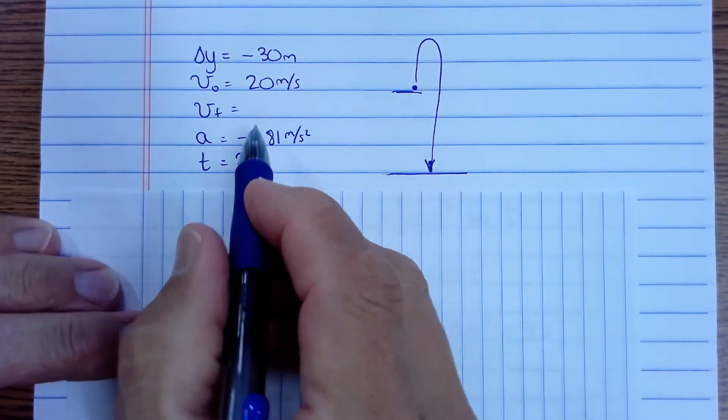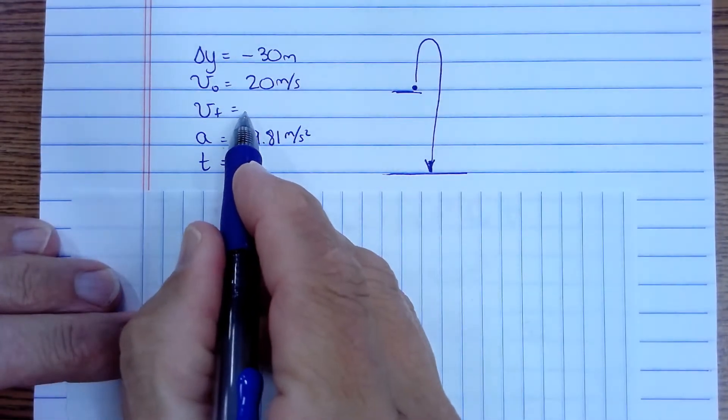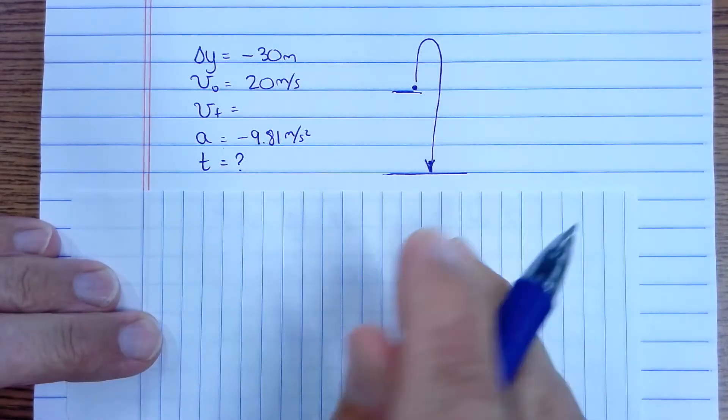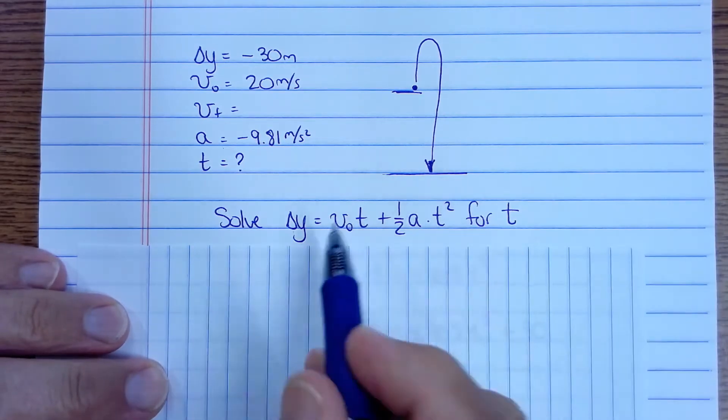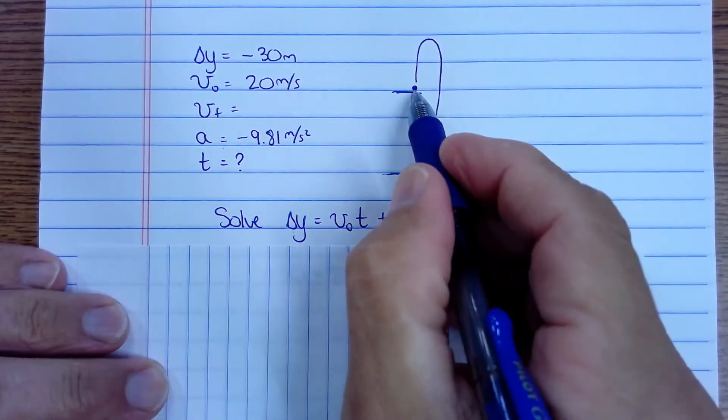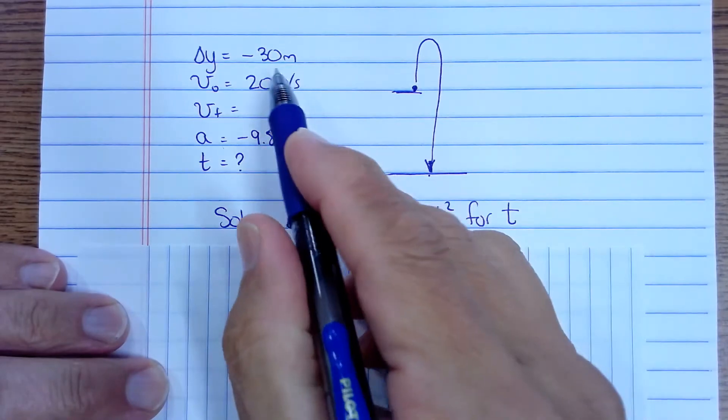You do not know the final velocity because you don't know how fast it's going when it hits the ground. So you're going to have to solve this equation for t. You do know delta y. It starts here. It ends up there. Delta y is negative 30.